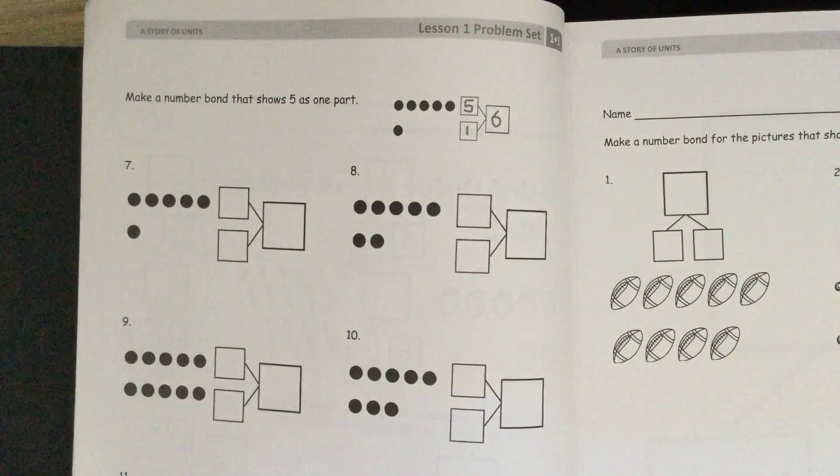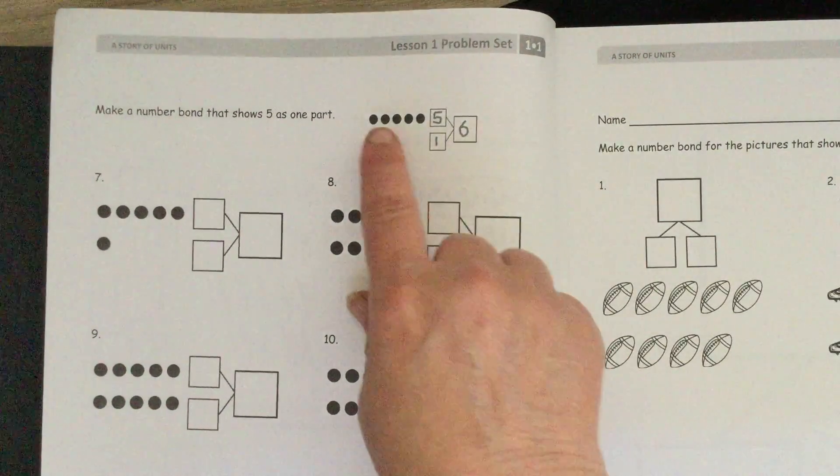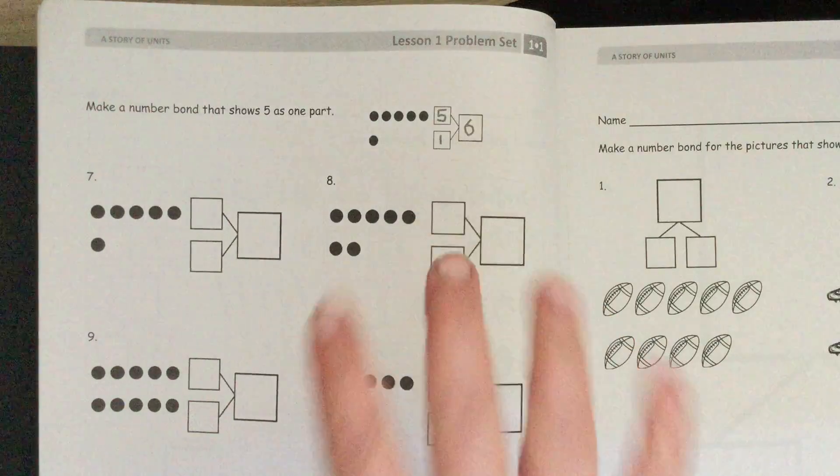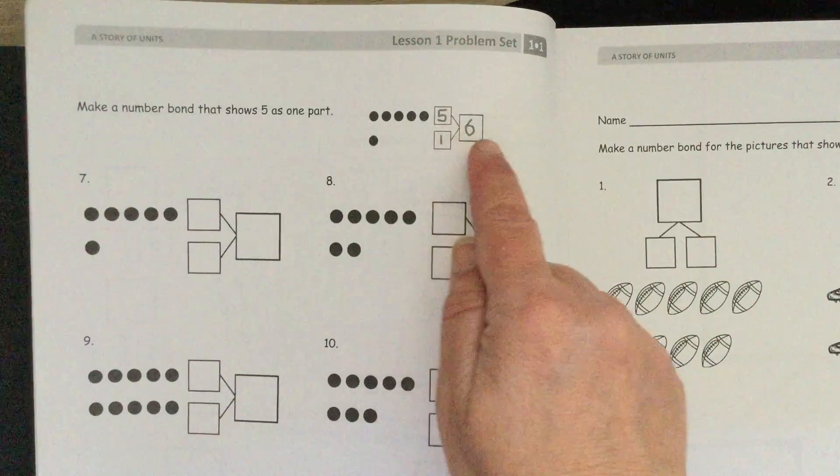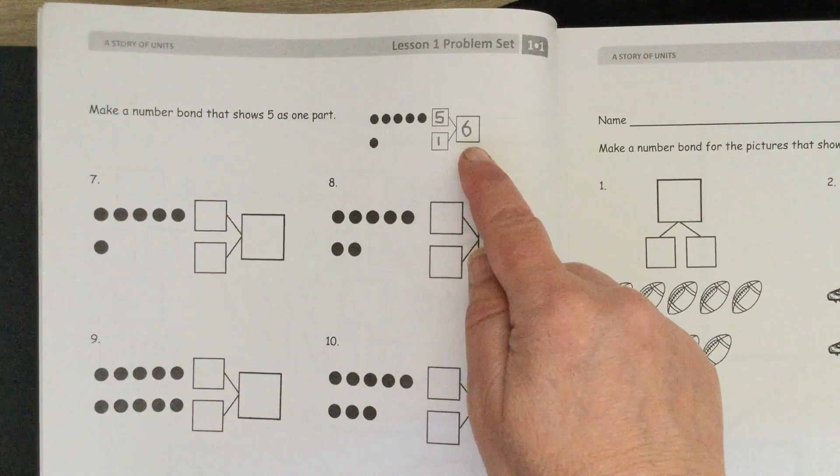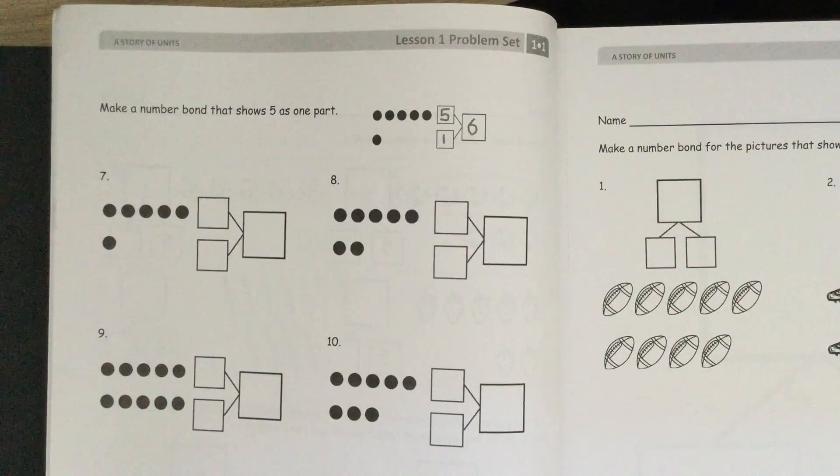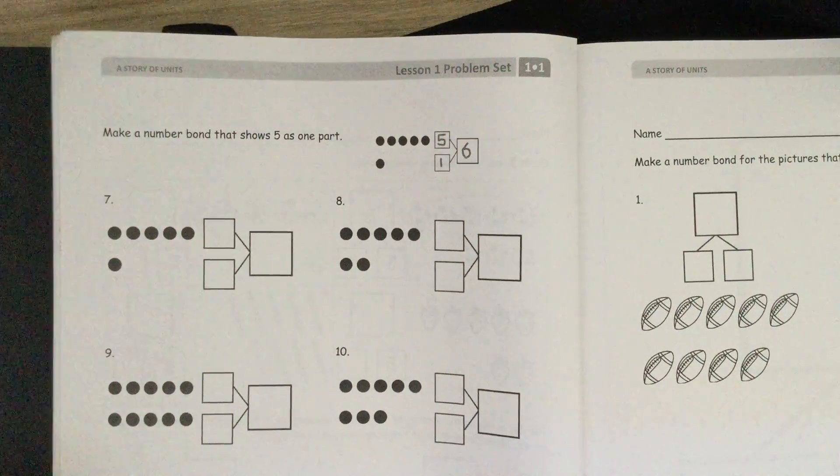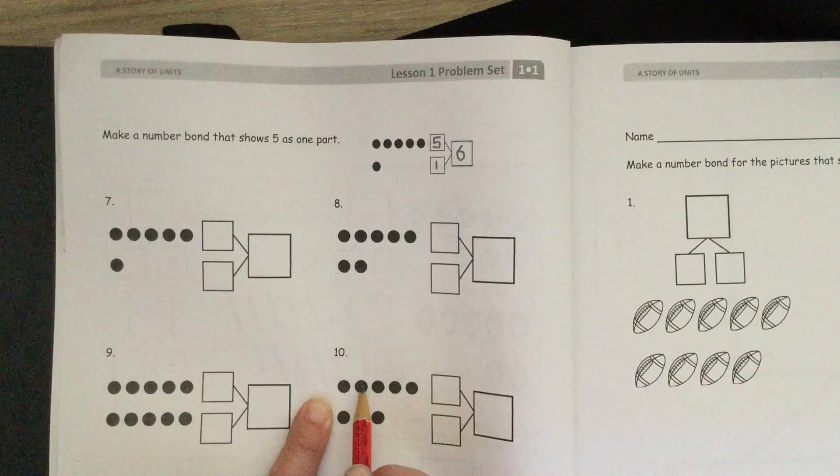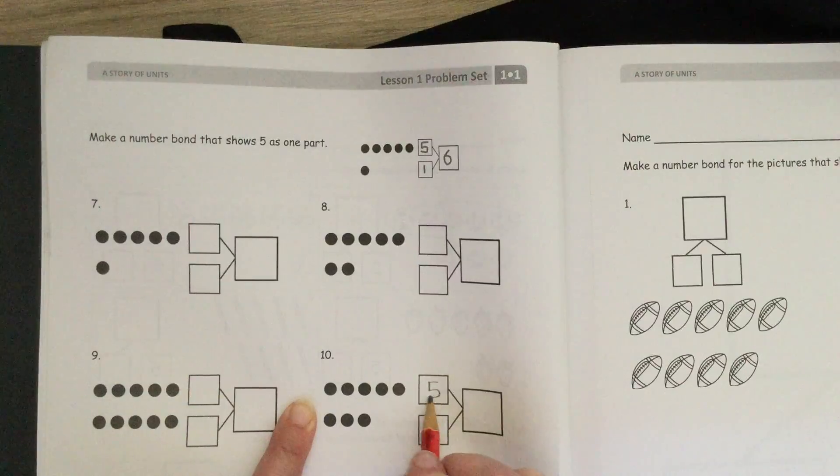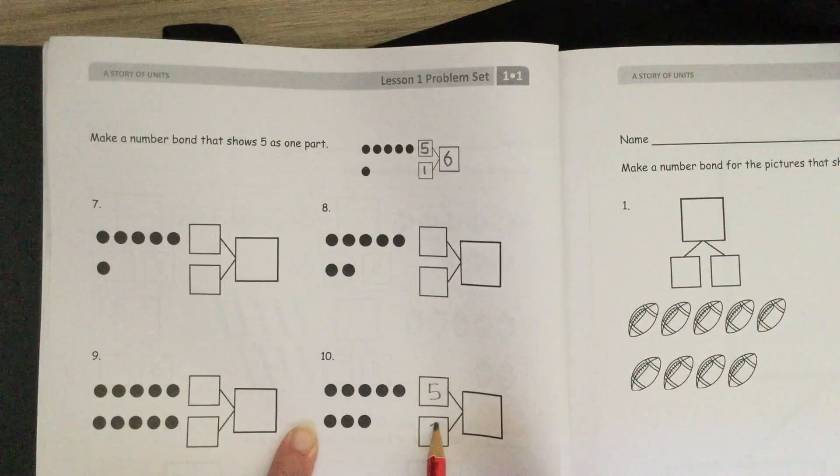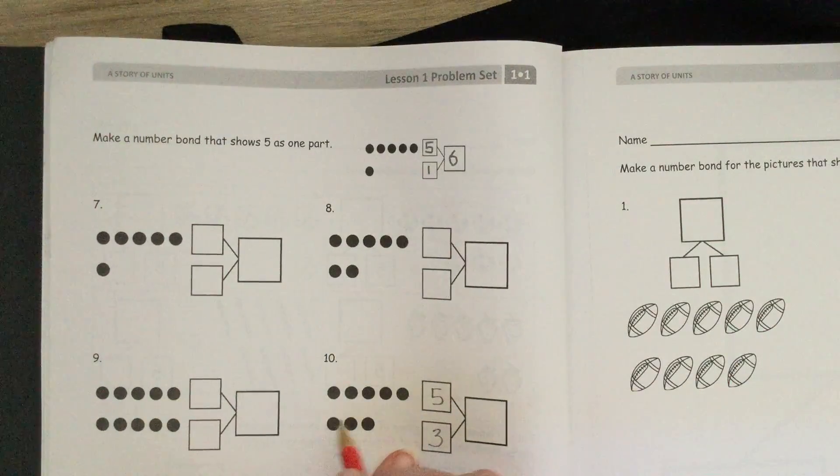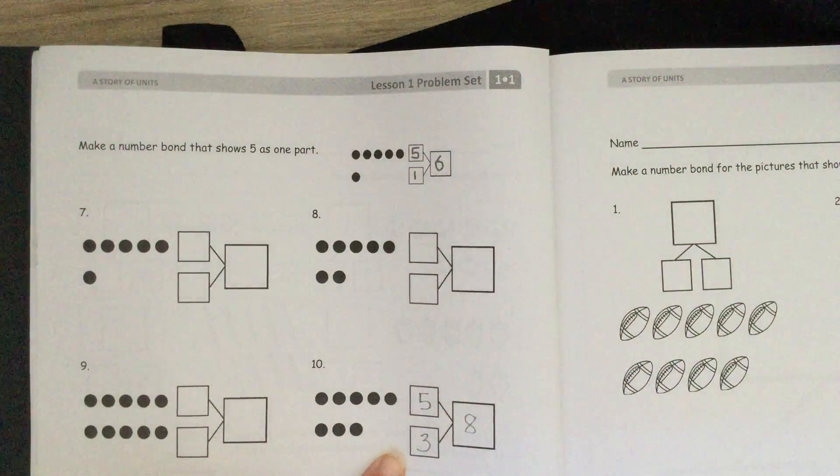Here it says make a number bond that shows 5 as one part. They give you an example. They have 5 dots here and they wrote 5. They have 1 dot here and wrote the 1. Then they turned this number bond sideways, but it still means the same thing. The two parts connecting to this one big whole or total. 5 plus 1 will be 6. Let's do one together. We'll just do number 10 here. Let's count. We have 1, 2, 3, 4, 5, so we'll put a 5 in here. And we have 1, 2, 3. 5 plus 3, like we did before, is 8. Check it: 5, 6, 7, 8. And you put your 8 in there for the total.